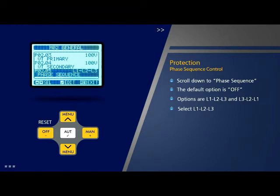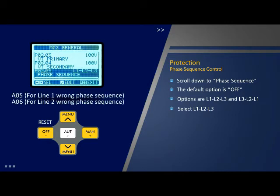If phase sequence control is enabled, the corresponding alarms A05 (for line 1 wrong phase sequence) and A06 (for line 2 wrong phase sequence) should also be enabled.